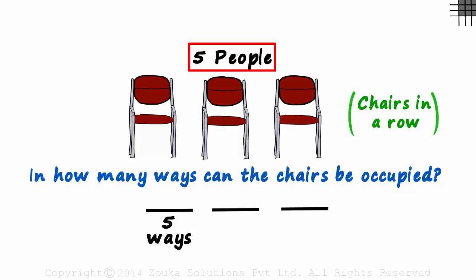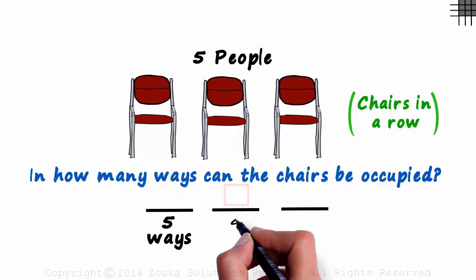So out of the five people, one person is seated on the first chair now. Now one person having taken the seat, in how many ways can the second chair be occupied? One person is seated here. It means one of the five people is seated on the first chair, and any one of the remaining four can be seated on the second. Once the first chair is occupied, the second chair can be filled in four ways.